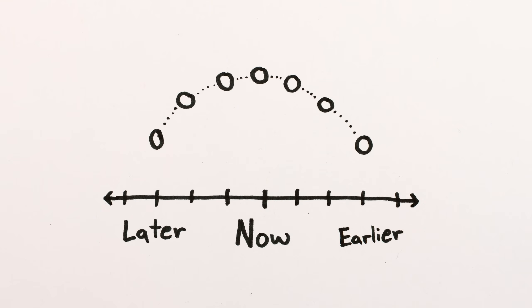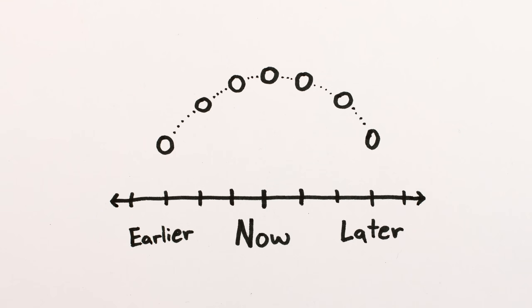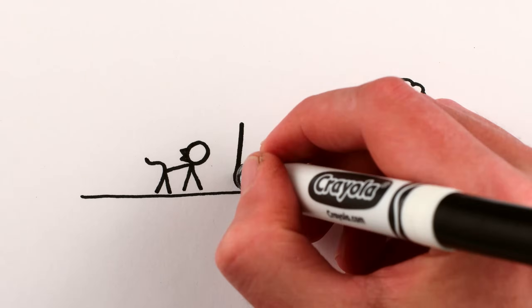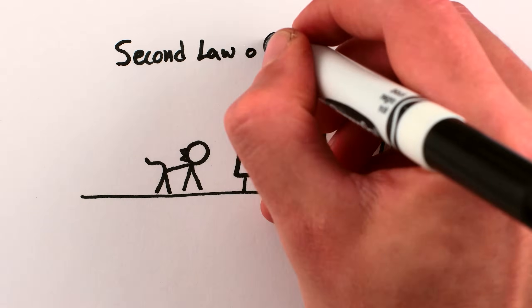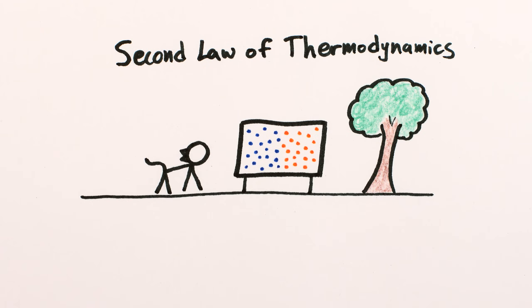The past and future are on an equal footing as far as the microscopic laws of physics are concerned. In the macroscopic world, however, there is one rule that does have time going in one direction only, the second law of thermodynamics.